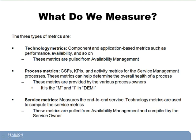Process metrics are the second type of metrics that we pull. These are critical success factors, also known as CSFs, key performance indicators, also known as KPIs, and activity metrics for all of the service management processes that we've talked about so far. These metrics can help determine the overall health of a process.